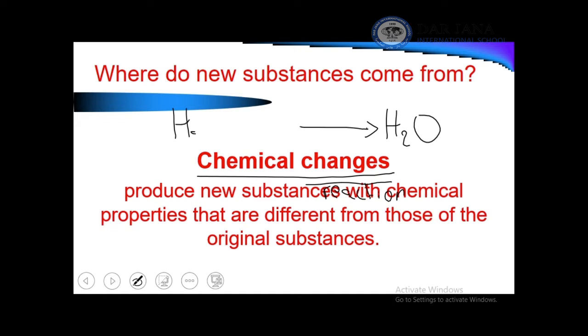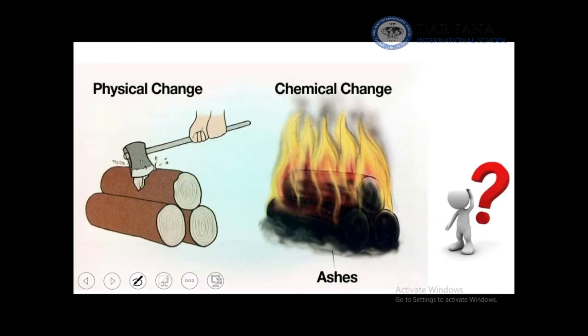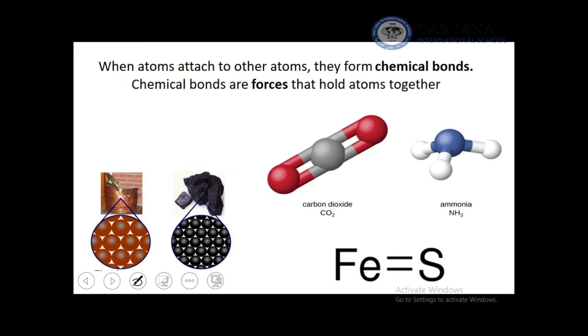An example of a chemical reaction is the formation of water (H₂O), done by reacting H₂ gas and O₂ gas. This is a chemical reaction because we are making a new substance — water in the liquid state. A physical change example is cutting wood, while a chemical change is burning wood, which turns into ash.